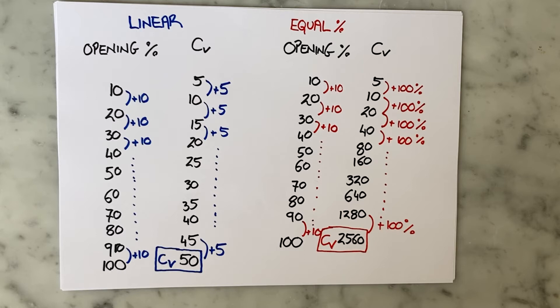Well we stumble into a challenge here. You know how I started by defining the CVs of these valves at 10% opening and at 20% opening? Why didn't I start at 0% and 10%?